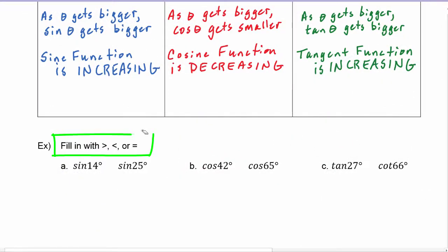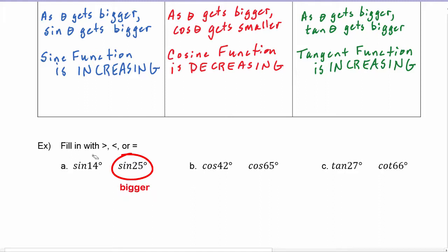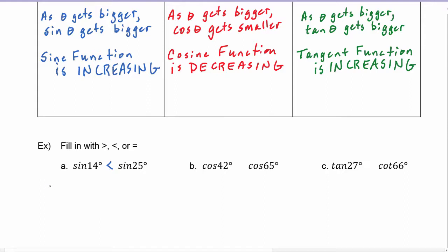In example a, we have to compare sine of 14 degrees to sine of 25 degrees using a greater than, less than, or equal sign. Because 14 is the smaller angle and 25 is the larger angle, and since sine is an increasing function — as theta gets bigger, sine of theta gets bigger — sine of 25 is going to be bigger than sine of 14. So sine of 14 degrees is less than sine of 25 degrees.